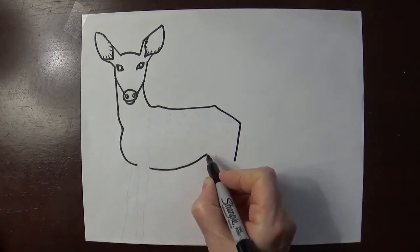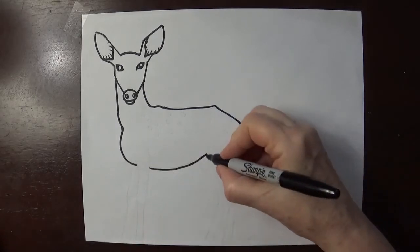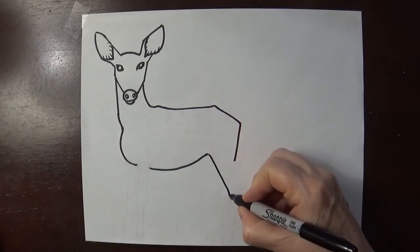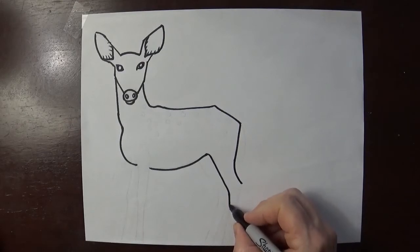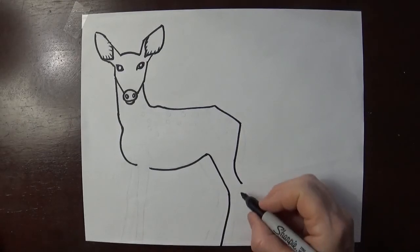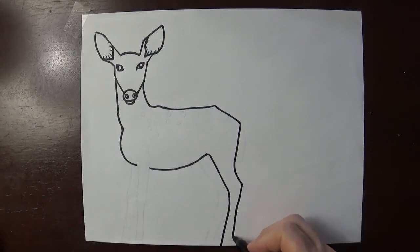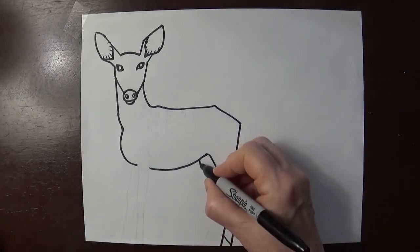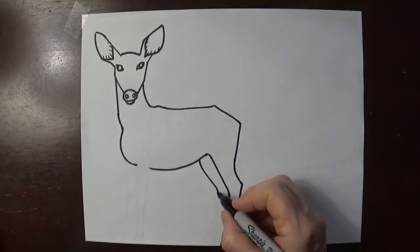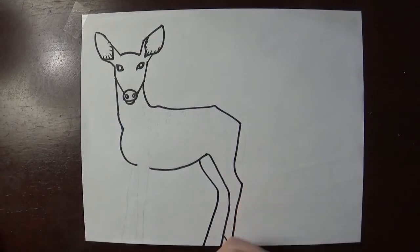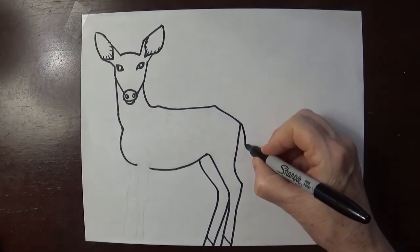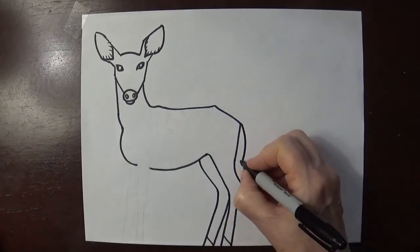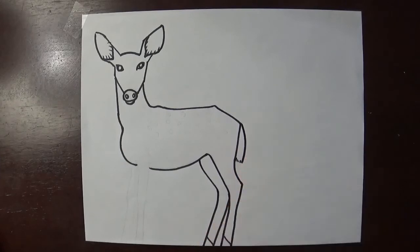It curves down and down, diagonal and diagonal. Here's the other leg, it curves down and down, diagonal and diagonal. The tail curves down one, two, three, four. The leg goes down, diagonal.